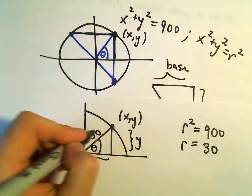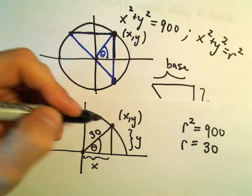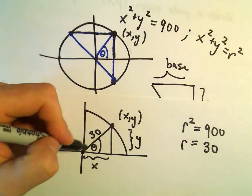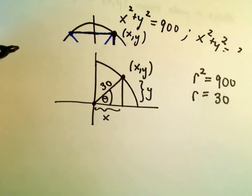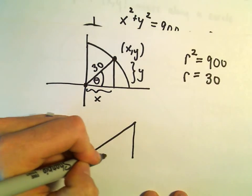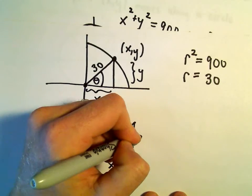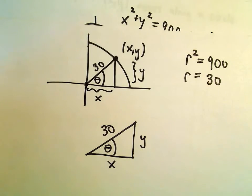So, actually, I know the length of the hypotenuse of this triangle, since it goes from the center of the circle out to the, you know, touches the circle. I know that that's going to be a radius, and that's going to have length 30. So, let's look at this triangle for a second. So, this is x, this is y. We've got our angle theta, and we know that this has value 30.